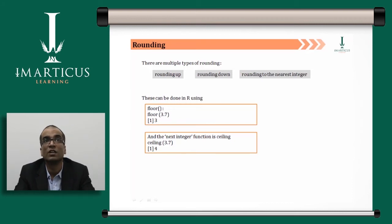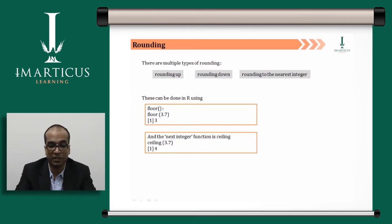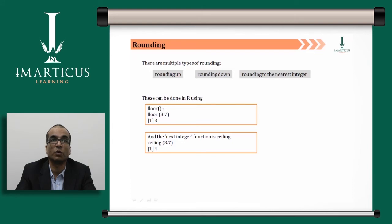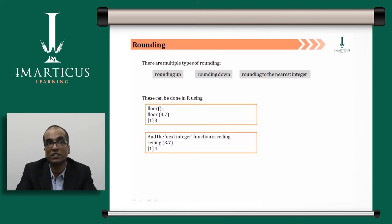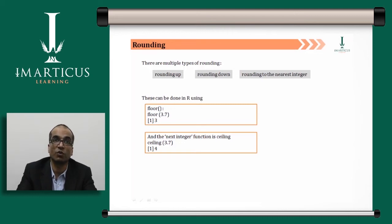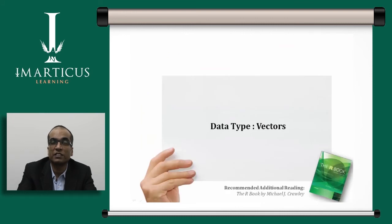If you only want a whole number from a division result without any decimal, you can use floor() or ceiling(). For example, floor(3.7) returns 3 — rounding toward the lowest value. ceiling(3.7) returns 4 — rounding toward the highest value.